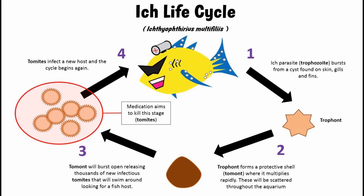Keeping a steady temperature of about 82 degrees Fahrenheit is recommended and will help make this process as fast as possible — something we absolutely want to do when treating fish.